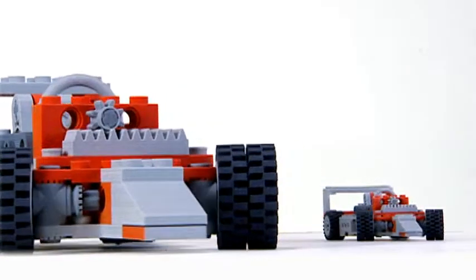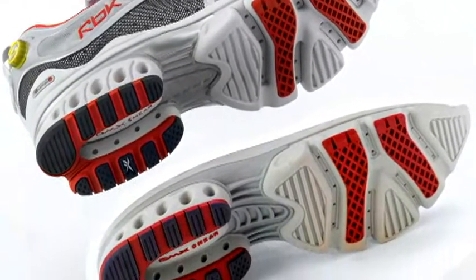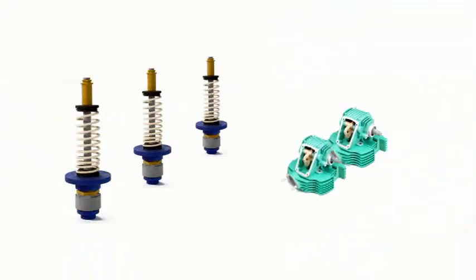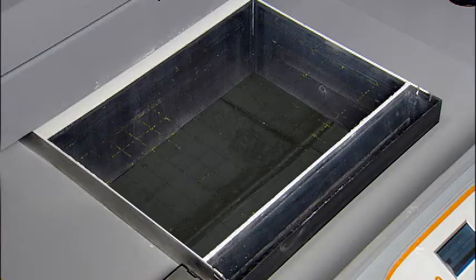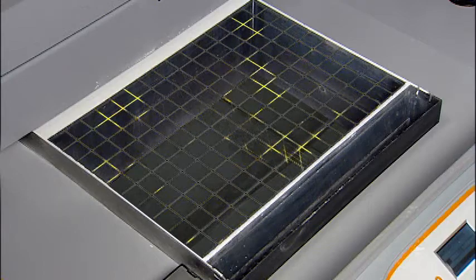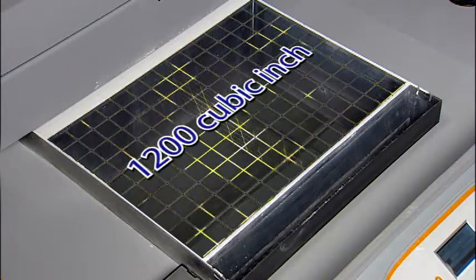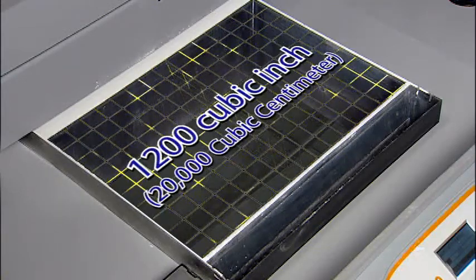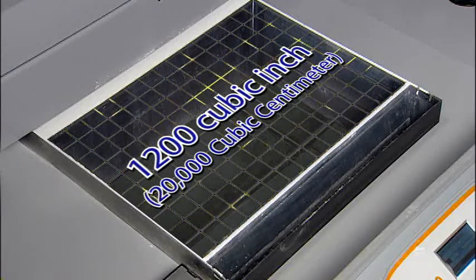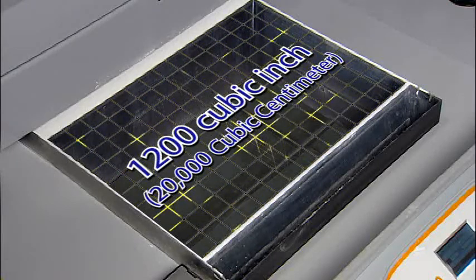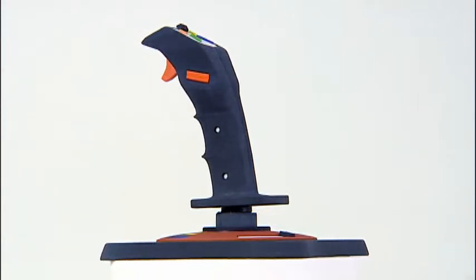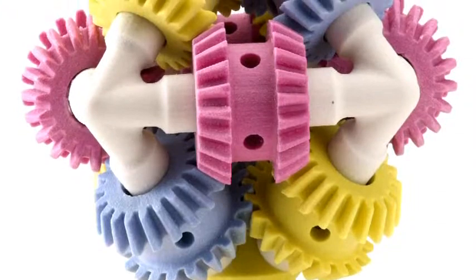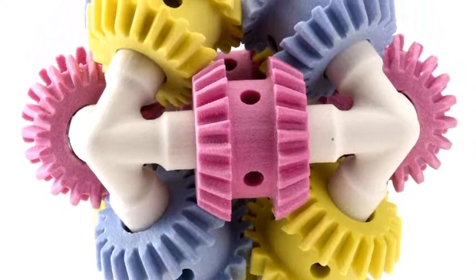Sometimes big just isn't big enough. Imagine printing out a very large prototype at full size, or having enough space to print multiple models at once. We responded to these needs by giving the Z printer 650 an impressive 1200 cubic inch, nearly 20,000 cubic centimeter print volume. The largest build volume of any 3D printer on the market today. Now it's possible to print many models at actual size, eliminating the hassle of having to combine several smaller pieces to form a whole.